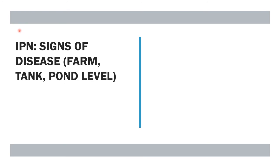For the signs of the disease at the farm, tank, and pond level, an important consideration is that the animals may show one or more of these signs, but the pathogen may still be present in the absence of any signs.